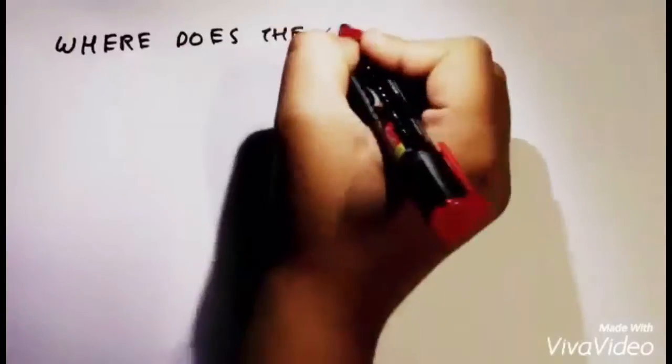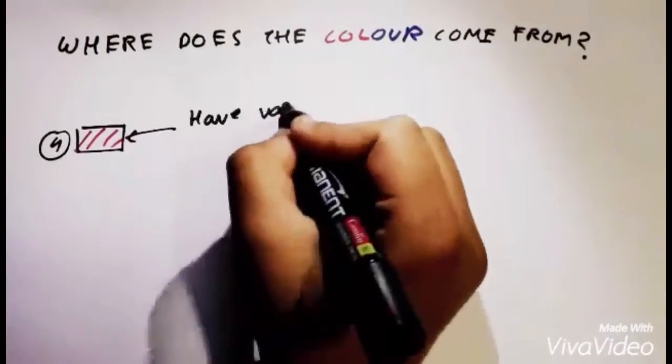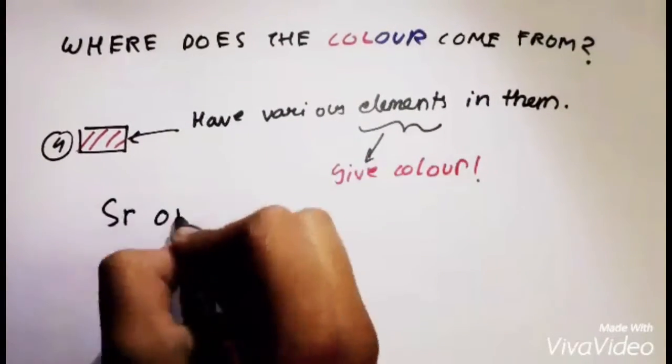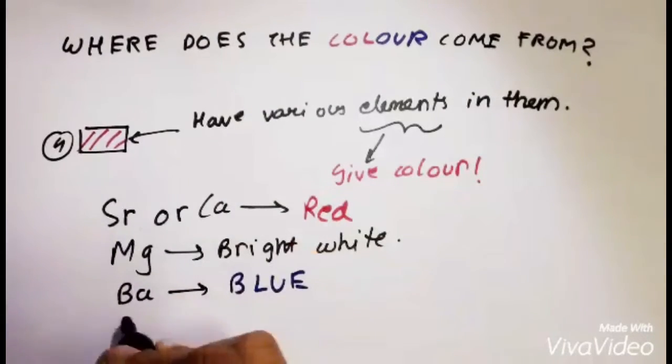Done with the physics? Well, the color is where the chemistry comes in. The effects of the skyrocket have various elements in them to give color. For example, strontium or calcium give red, magnesium gives bright white, barium gives blue, and copper gives green amongst many others.